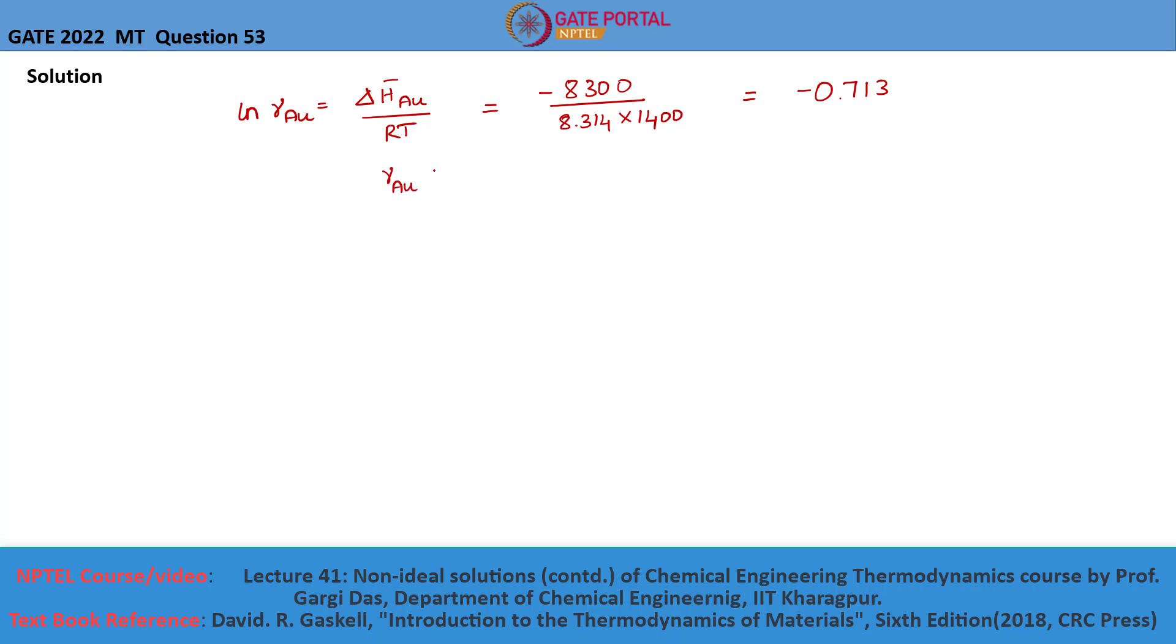The activity coefficient of gold is exponential of minus 0.713, which is equal to 0.49017. As we know, the activity of gold is equal to activity coefficient of gold multiplied by the mole fraction of gold, which is equal to 0.49017 multiplied by 0.25.